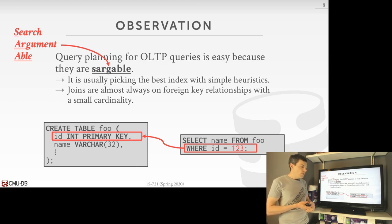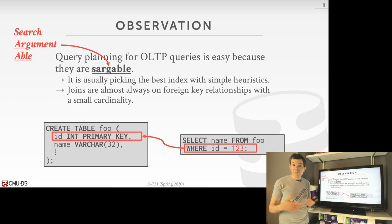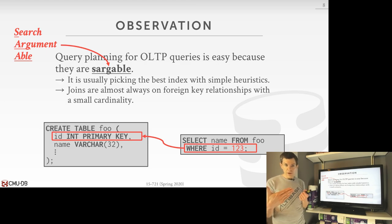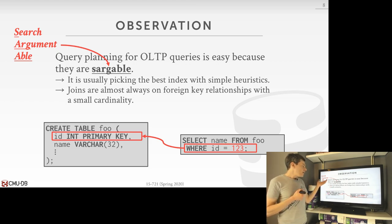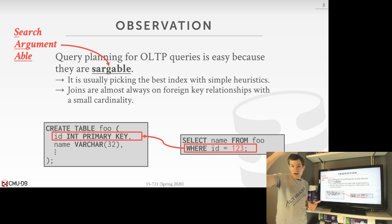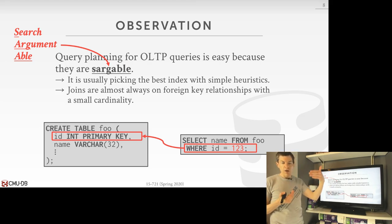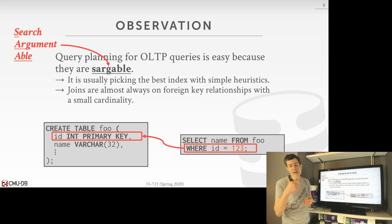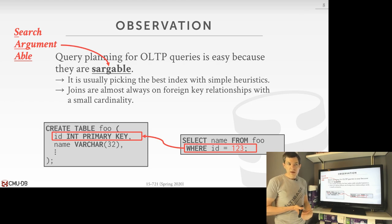Similarly for joins, in an OLTP setting they're almost always on a foreign key. If you have a foreign key relationship, there'll be an index to enforce referential integrity on the parent table. When you want to do your join, it's easy to pick the parent table as the outer table and the foreign key child as the inner table, doing a nested loop index join. So for OLTP queries, it's usually pretty simple to do query planning using simple heuristics-based optimization.